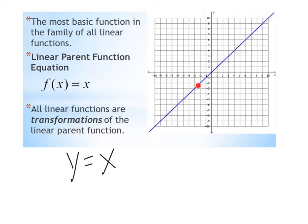1 equals 1, 2 equals 2, 3 equals 3, negative 2 equals negative 2, negative 4 equals negative 4. All linear functions are transformations of this parent function in the family of linear functions.